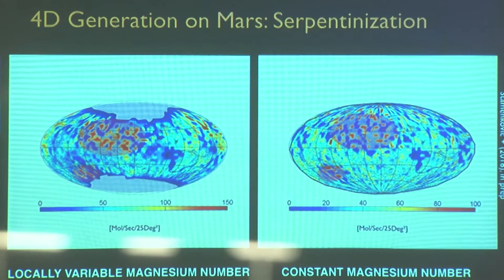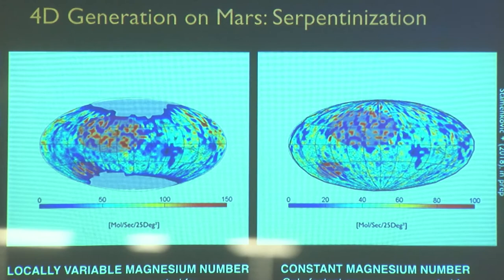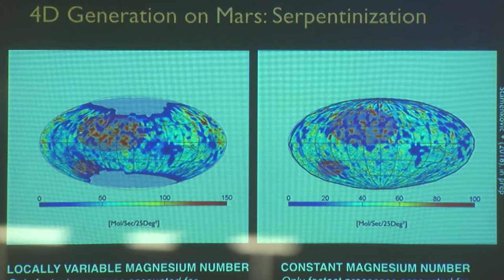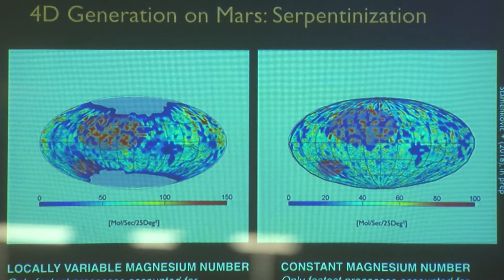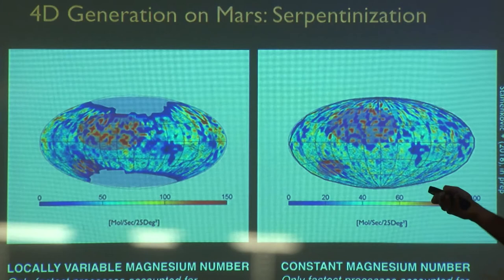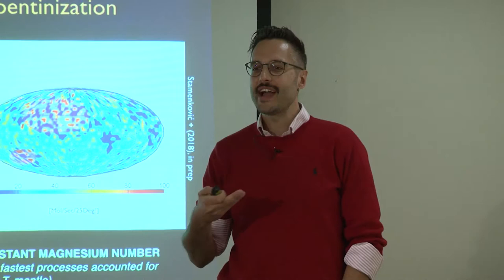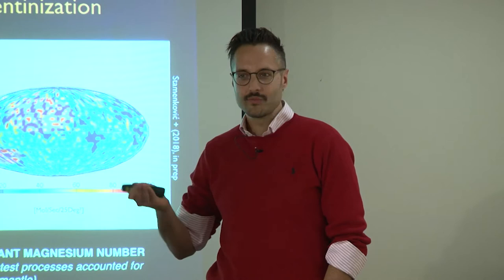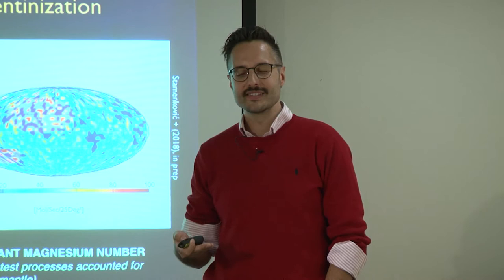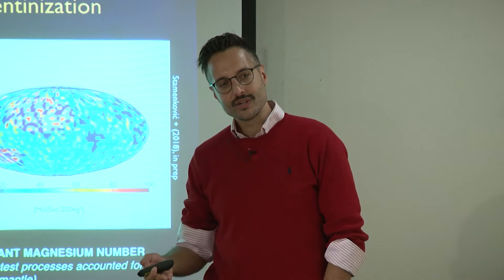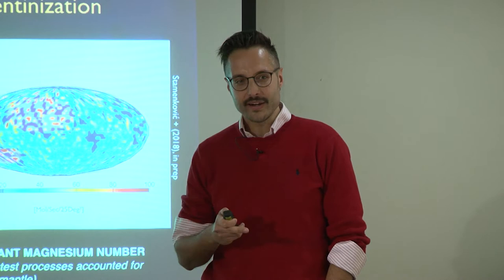Looking at the map, the volcanoes — Olympus Mons and the whole Tharsis region — are over here, and Valles Marineris is here. The zones that are really interesting for serpentinization are Arabia Terra, which is a fascinating region to look at. From these simulations we can see that some things don't matter that much, and figuring out what really matters is crucial — because when we know that, we can feel confident enough to make predictions for worlds where we don't have much data.